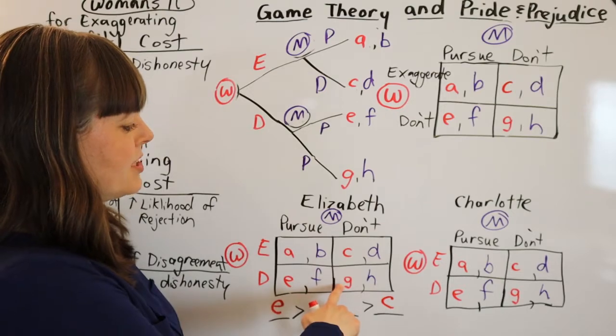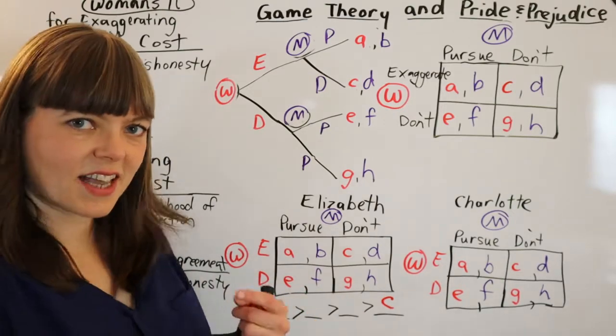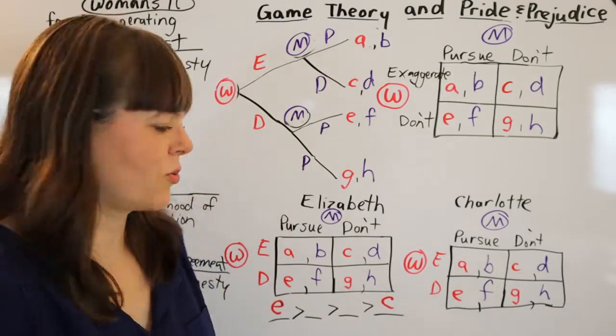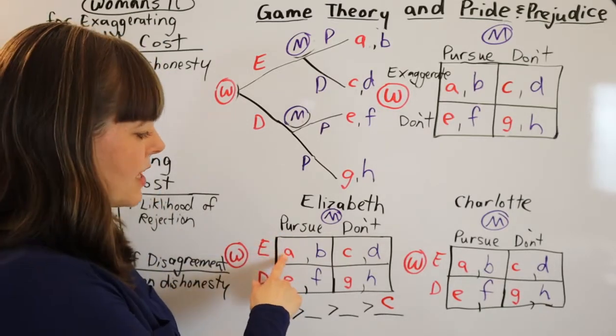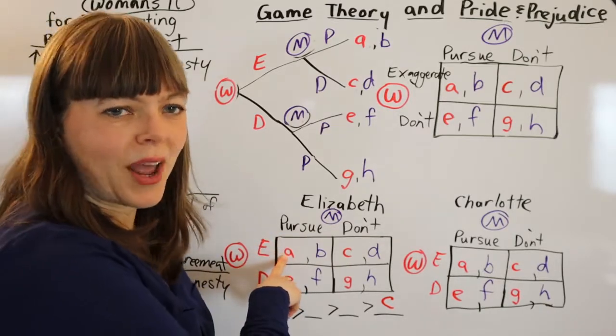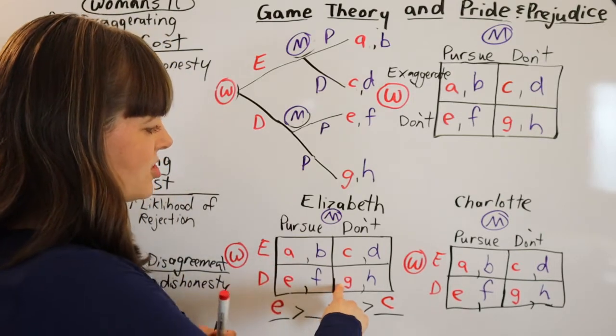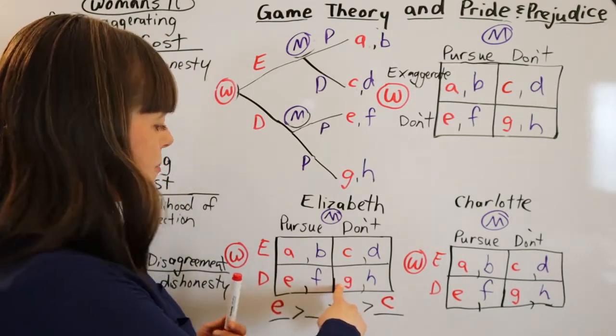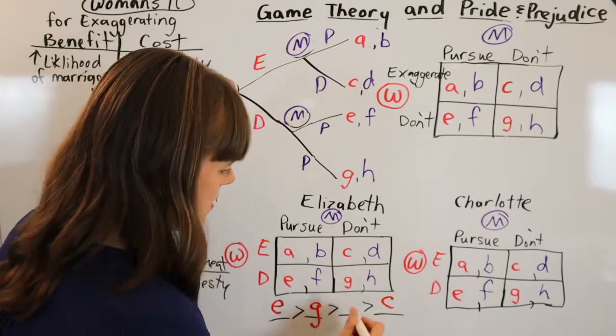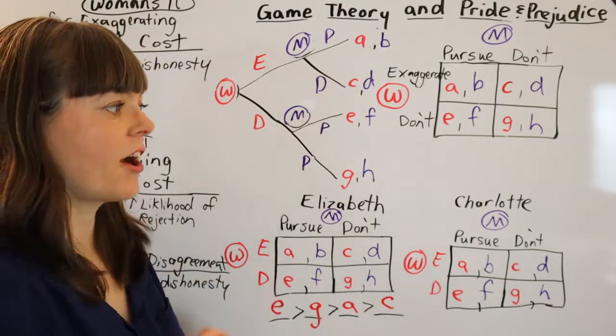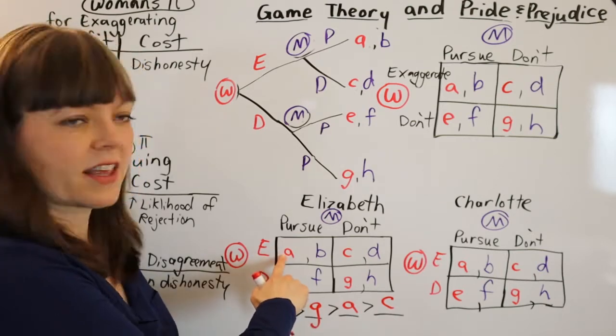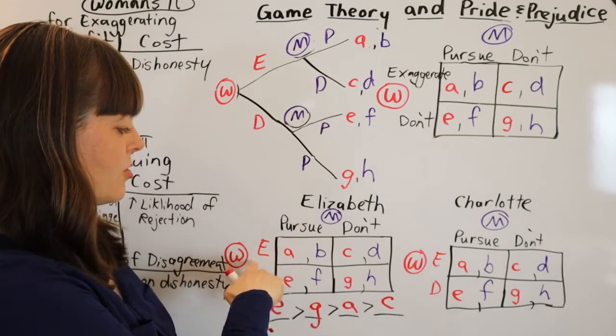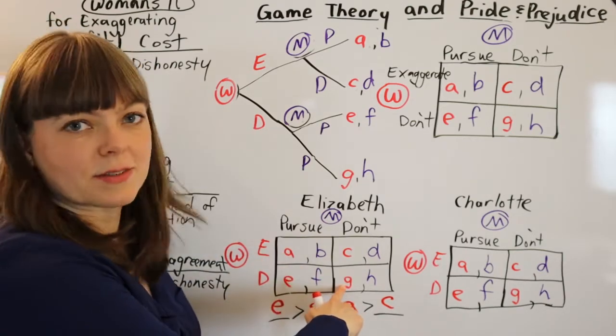So is the A better or is the G better? And this actually might be a source of disagreement between Elizabeth. Elizabeth really doesn't like exaggerating. It feels slimy to her. She loses her pride. And therefore, the G actually is probably better from Elizabeth's perspective. And of course, when we go over here and do Charlotte's payoffs, we're going to reverse these. Charlotte thinks this box, being pursued and exaggerating is better than this box G.